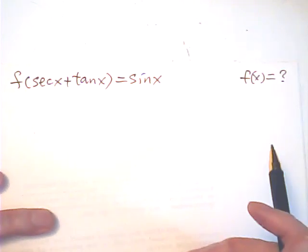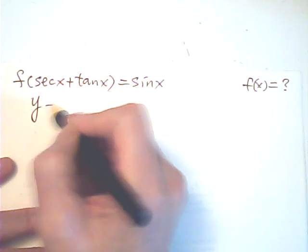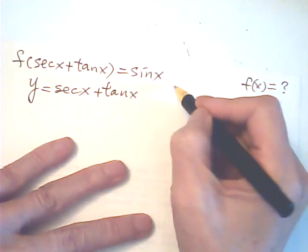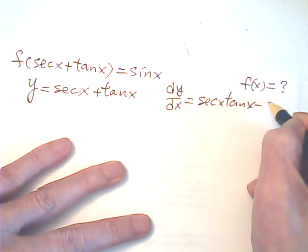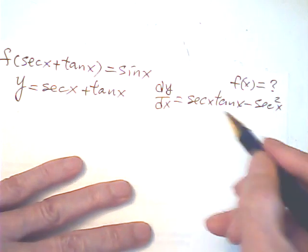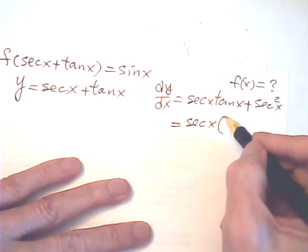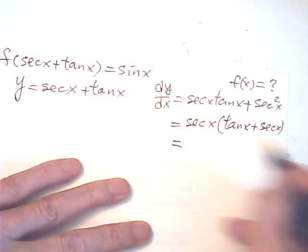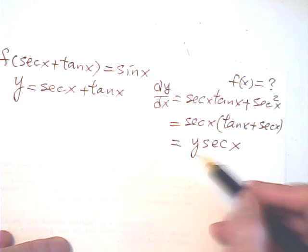Method two is different. First, I'll let y = sec x + tan x. Then dy/dx = sec x·tan x + sec²x, which factors as sec x·(tan x + sec x), which equals sec x · y. So dy/dx = y·sec x.